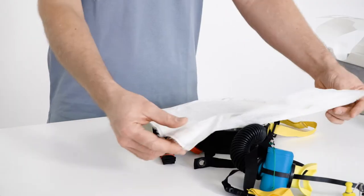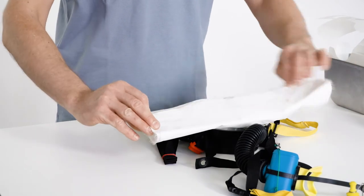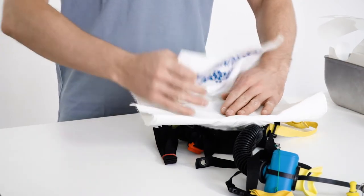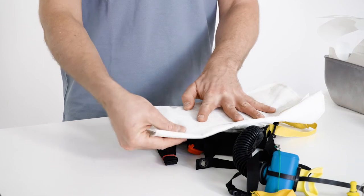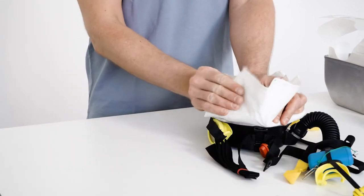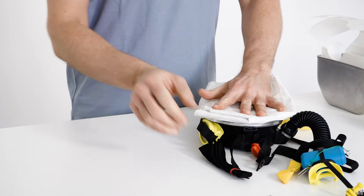To do this, place the training device so that the breathing bag is free. Fold the upper edge of the breathing bag down and the lower edge up. Fold the first corner to the middle and the second corner under the first corner.